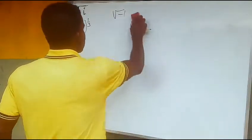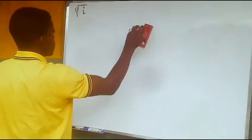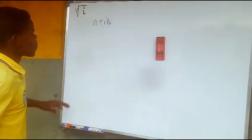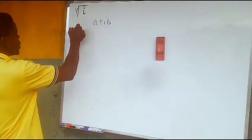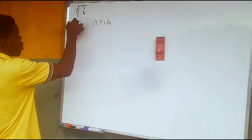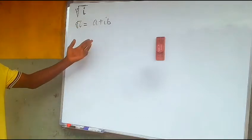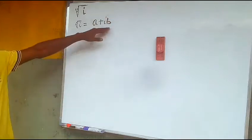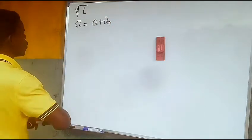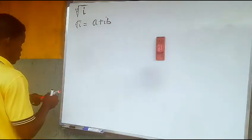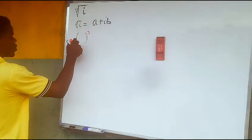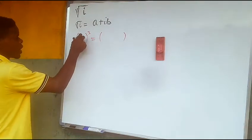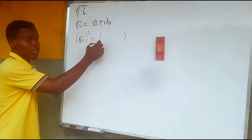Let's take note that the cube root of iota will produce a complex number in the form a plus ib. So if this is the case, then we say the cube root of iota equals a plus ib, which is a complex number having a real part a and an imaginary part ib. If we take the cube of both sides, raising both sides to the power three, we're going to have the cube root of i raised to the power three, which equals a plus ib to the power three.